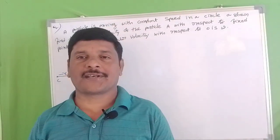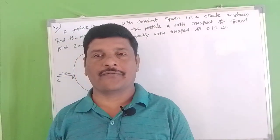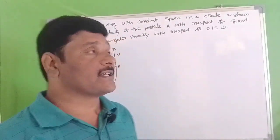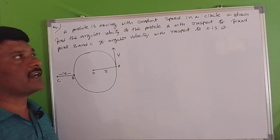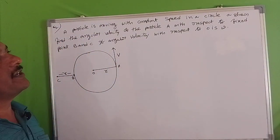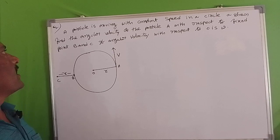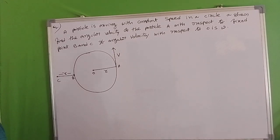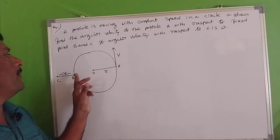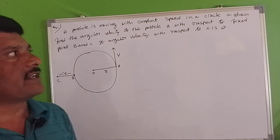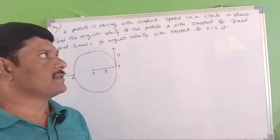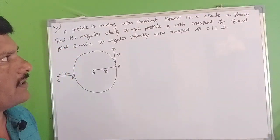Welcome to Bhaskarra Vankalupati Physics. Our question is: a particle is moving with a constant speed in a circular path. Find the angular velocity of the particle A with respect to fixed point B. And C, if the angular velocity with respect to O is omega.